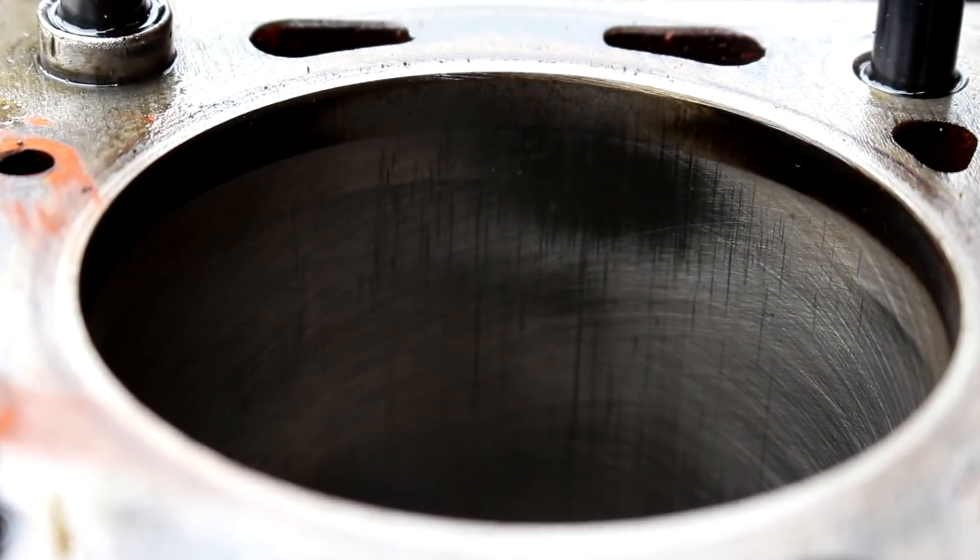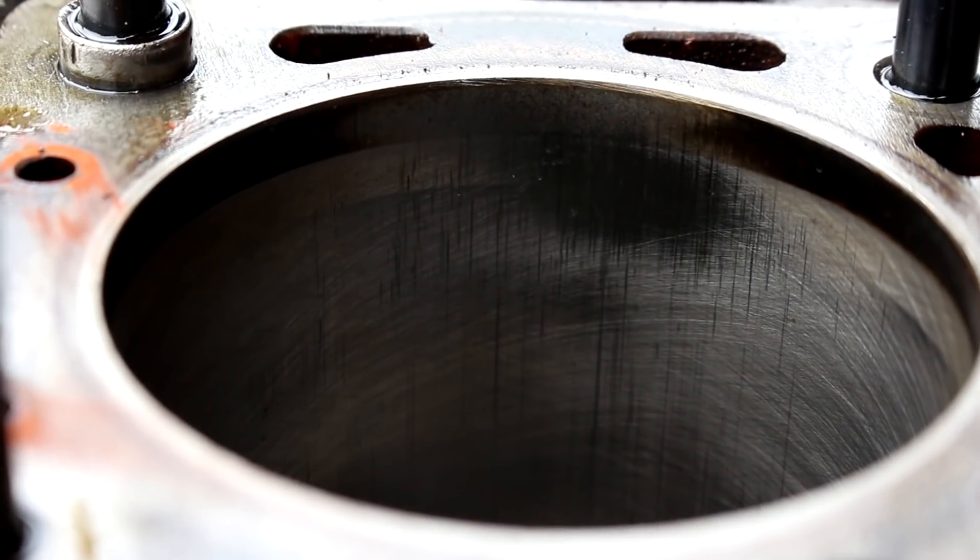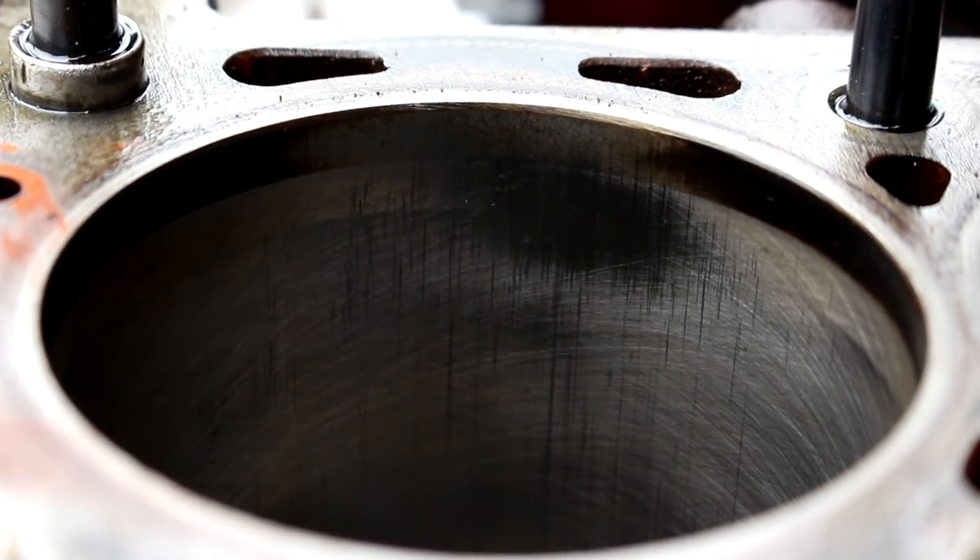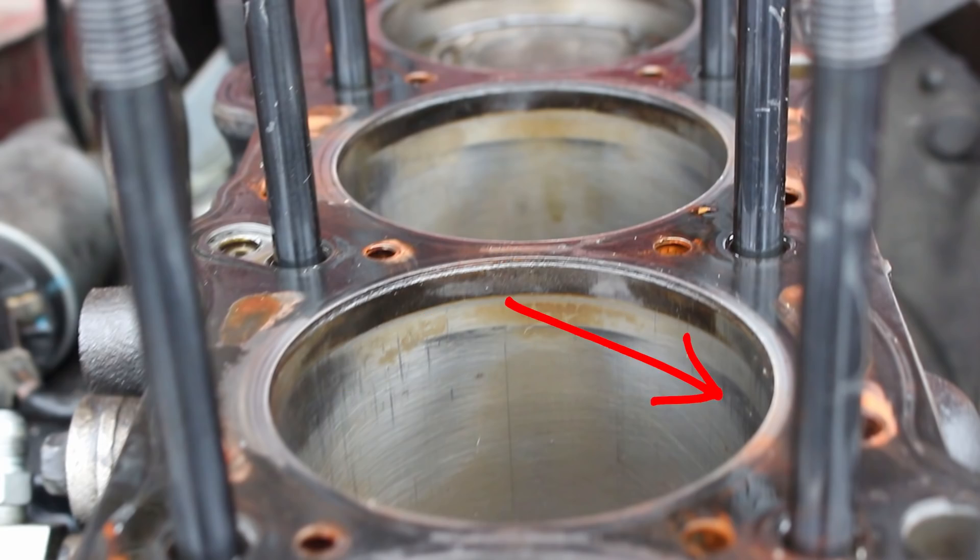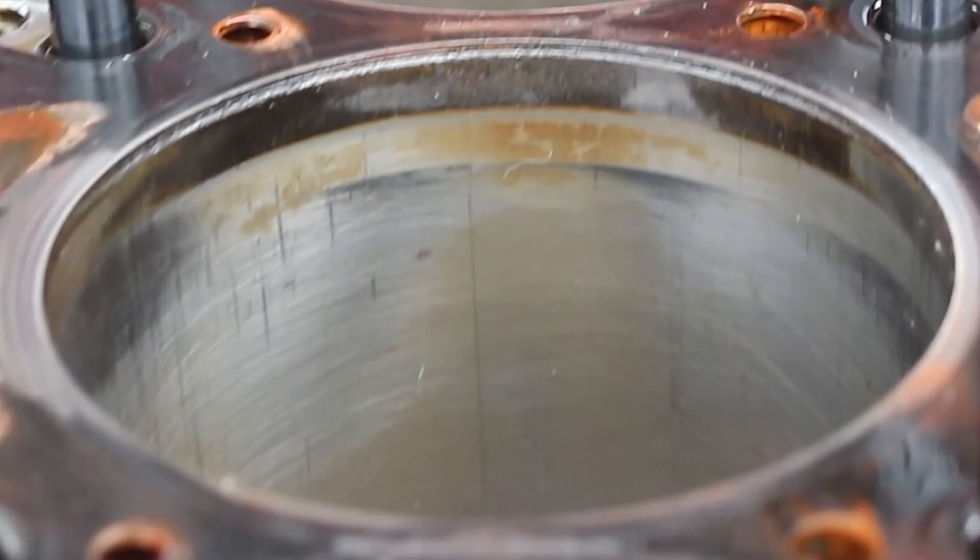And the last thing I want to get into here that's been staring at everyone in the face are these vertical lines. How bad is this scoring? What is this marking right here and over here? First, let's take a look at the two different sides of the cylinder wall. This side right here, the passenger side, looks like it's more worn out than the driver side.